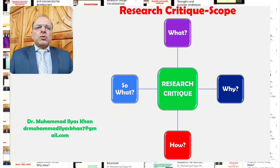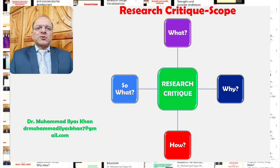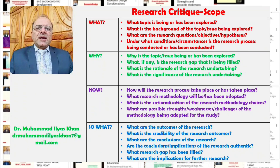The scope of the research critique revolves around four basic questions related to the research topic being explored: first, the 'what' of the research topic or project; the 'why' of it; the 'how' of it; and lastly, the 'so what' of it. We will briefly explore these four questions in elaborating on the research critique process.